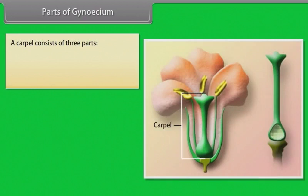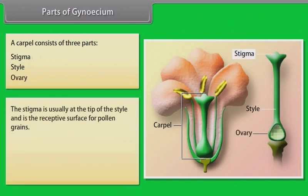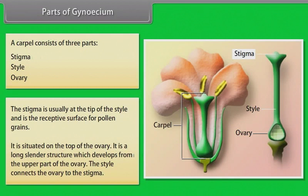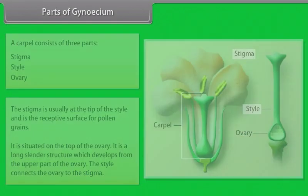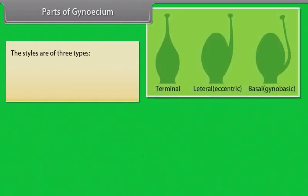Parts of gynoecium: A carpel consists of three parts — stigma, style, and ovary. The stigma is usually at the tip of the style and is the receptive surface for pollen grains. The style is a long slender structure connecting the ovary to the stigma. The styles are of three types: terminal or apical, lateral, and gynobasic.